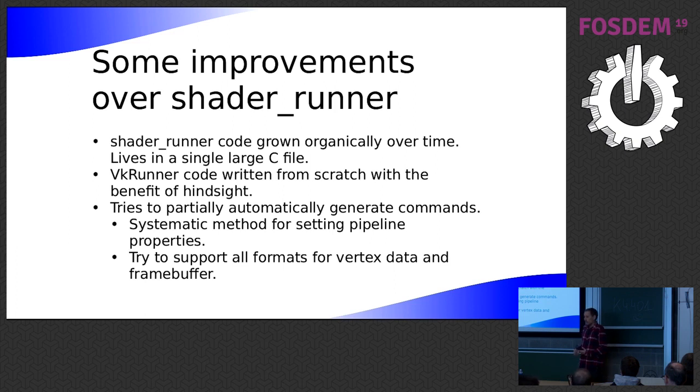So I've also tried to make it so that a lot of the commands are partially automatically generated. So for example, there's test commands to set all of the properties that are known on a pipeline. And so they're automatically taken from the header file, which describes the pipeline create info. So in vk runner, there's a command for each member of the pipeline create info struct, and it just sort of automatically puts the value in the right offset in the struct.